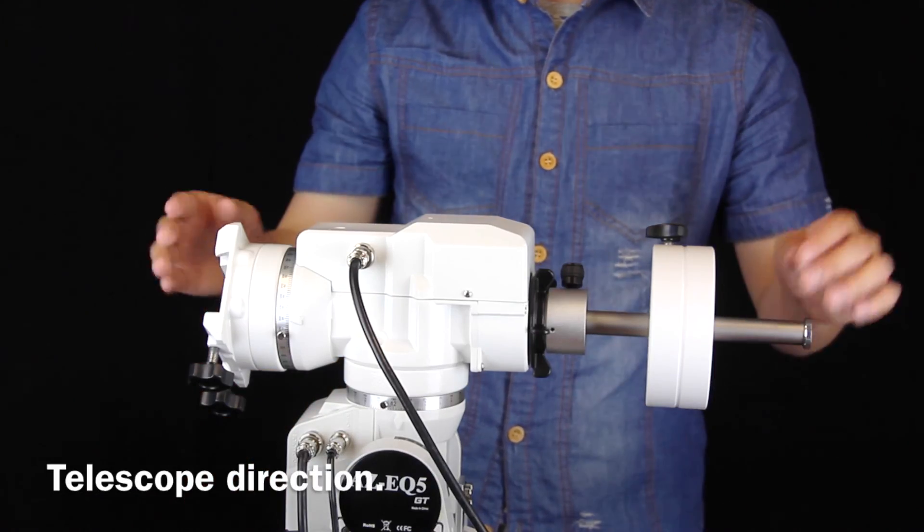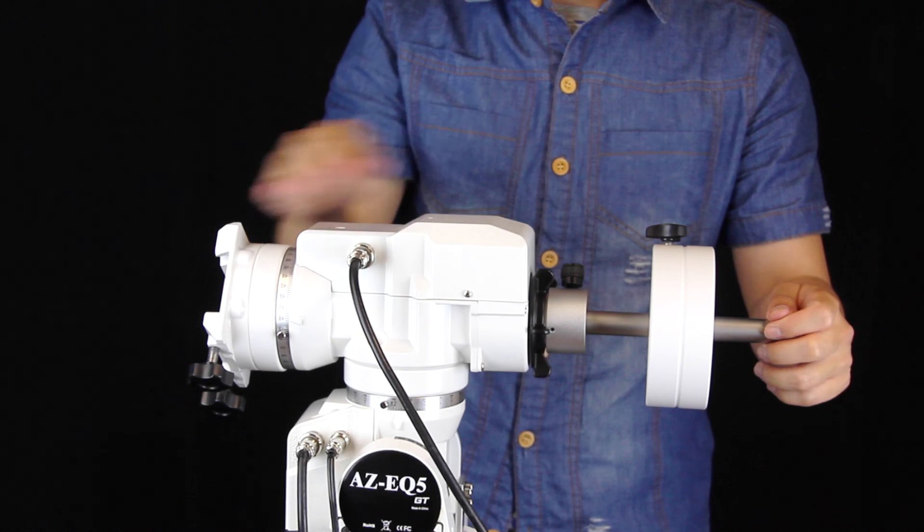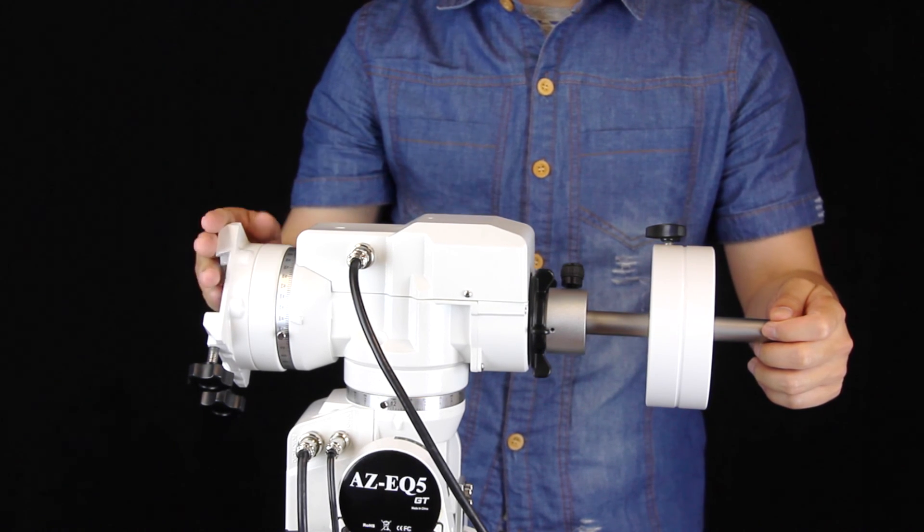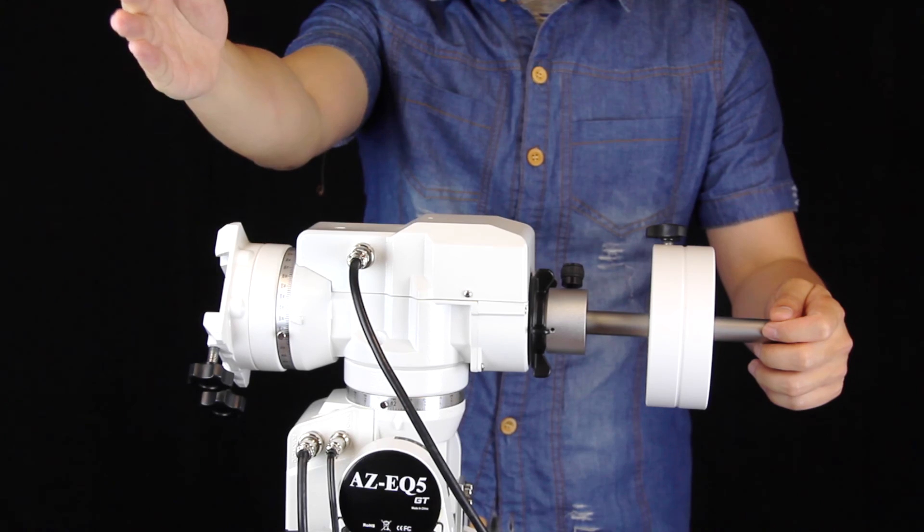You should be careful with the direction of the telescope installation. When you stand behind the mount, the telescope tube should be installed on your right hand side and pointing to the front.